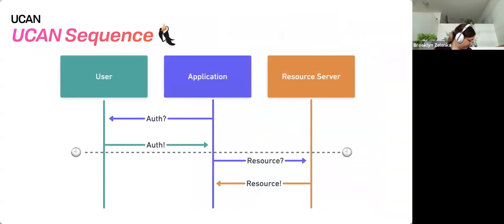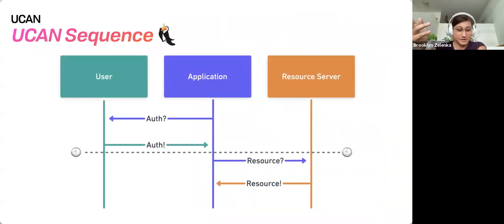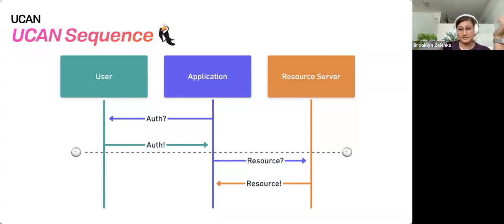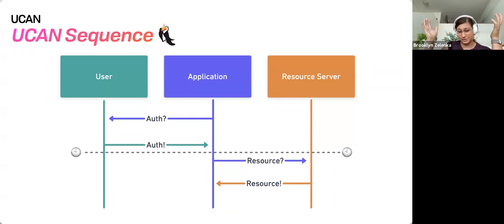The UCAN sequence, by comparison, is much shorter — it happens in two phases. One is the application asking the user, hey, I'd like to do these things, can I? And it says: yep, here's a certificate for your DID. As long as you're able to sign this, you can prove that these are the capabilities you have access to. Then sometime later, it wants to use this — and it just says, I'm trying to use this thing as the user. And it goes: oh yeah, sure — signature matches, that's all great, here's your resource. And that's it.